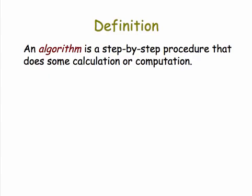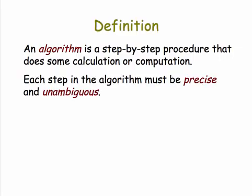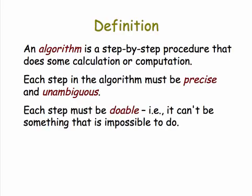Here's a good definition of an algorithm. It's a step-by-step procedure, like a recipe, that does some calculation or computation. However, each step in the algorithm must be precise and unambiguous. And also, each step must be doable. It can't be some operation that's impossible to do.